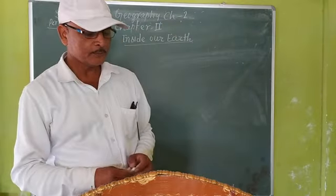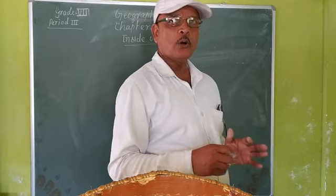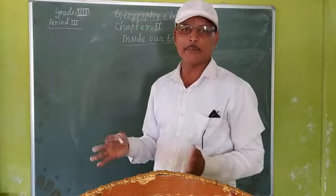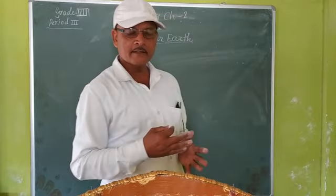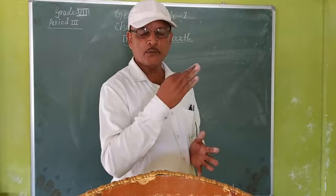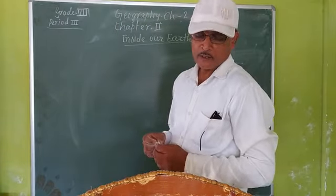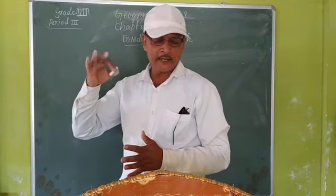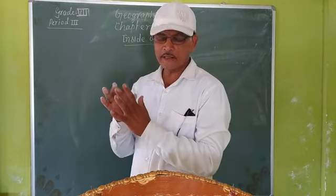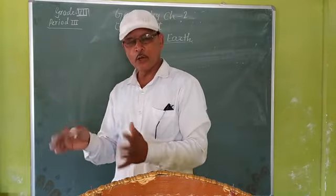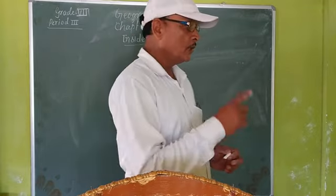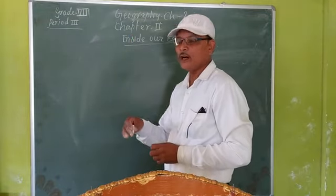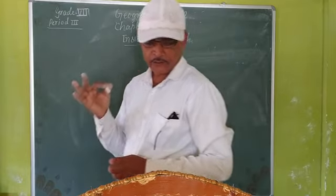Dear students, you know that the Earth is almost a spherical object. Its radius is 6,400 kilometers. The interior of the Earth consists of a central core with several concentric layers surrounding it. The core is the densest part of the Earth while the outer layer is least dense.